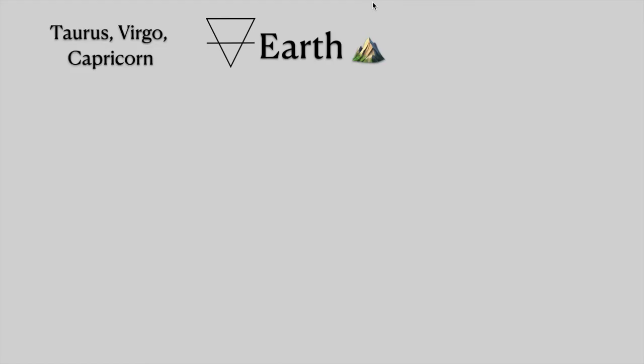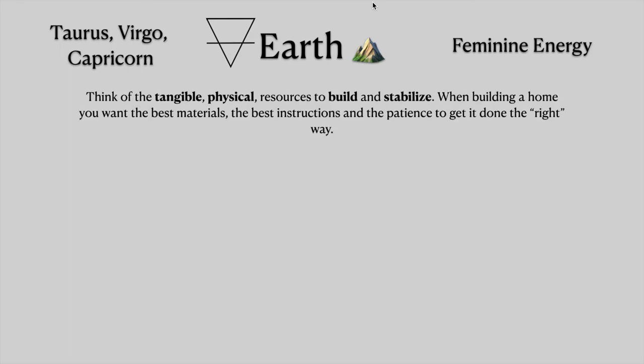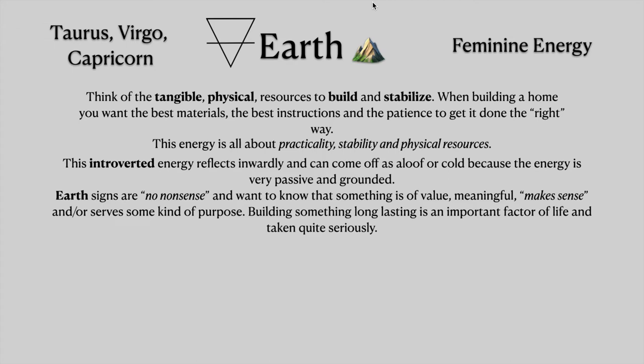Next up we have Earth. This is Taurus, Virgo, Capricorn, and this is feminine energy. Think of the tangible, physical resources to build and stabilize. When building a home, you want the best materials, the best instructions, and the patience to get it done the right way. This energy is all about practicality, stability, and physical resources. This introverted energy reflects inwardly and can come off as aloof or cold because the energy is very passive and grounded. Earth signs are no-nonsense and want to know that something is of value, meaningful, makes sense, and or serves some kind of purpose. Building something long-lasting is an important factor of life and taken quite seriously.